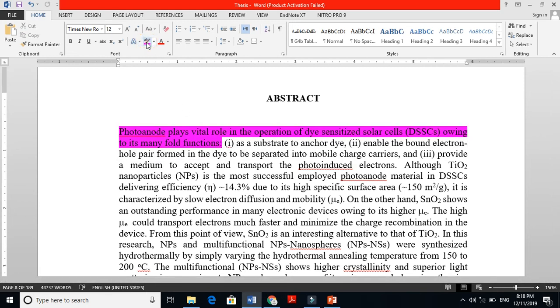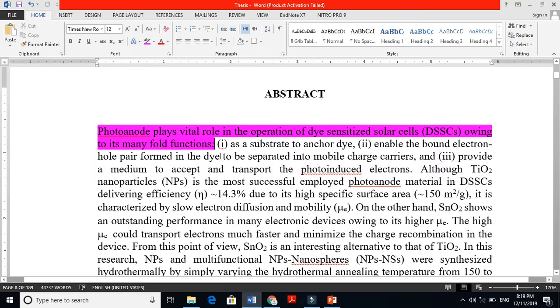I am telling the readers the most important thing - that I am working on photoanode and I am telling the benefits, the key property of photoanode, that it plays very important role in the operation of dye-sensitized solar cell. Why does it play important role? Because of its manifold functions. Number first: it is a substrate to anchor dye. This is the first feature - to provide home, to provide locations for the dye. Dye anchor means to spread there.